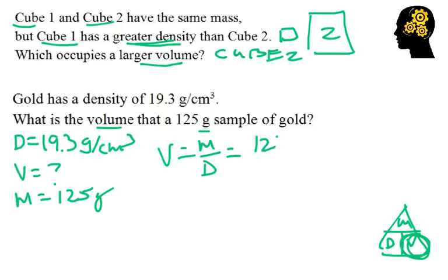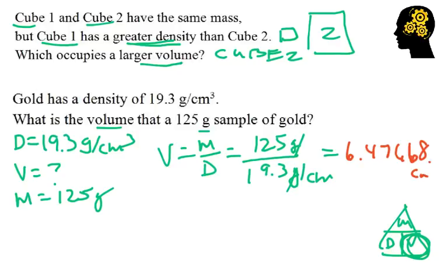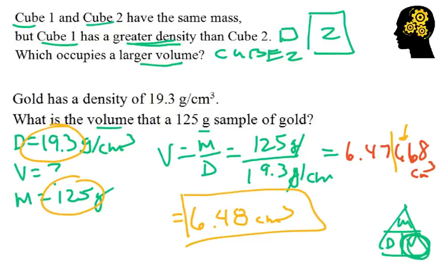That's 125 grams over 19.3 grams per cubic centimeter. Grams drop out. And so my answer. I get 6.47668. And that's going to be cubic centimeters. I've got three significant figures. I've got three significant figures. I want three significant figures. So my final answer is going to be 6.4. And I'm going to make that an 8 because this guy makes it round up. Cubic centimeters. And that's how we do those kind of problems.